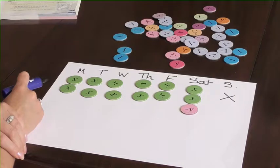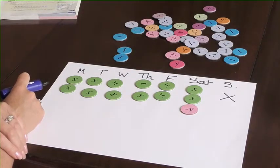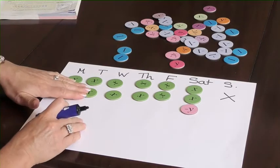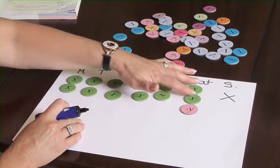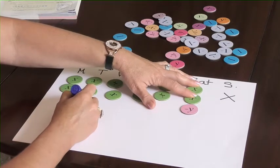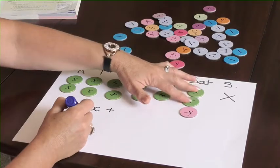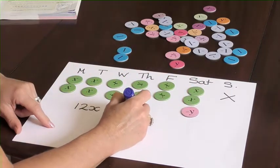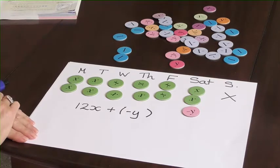So the first part of the question, express her working hours in a week in terms of X and Y. So we can see quite clearly that we've got 2, 4, 6, 8, 10, 12 lots of X and a negative Y. And that's how many hours in the week she will be working in terms of X and Y.